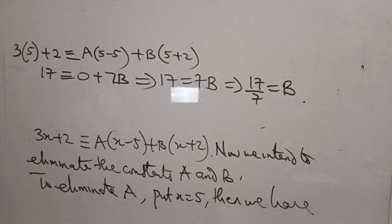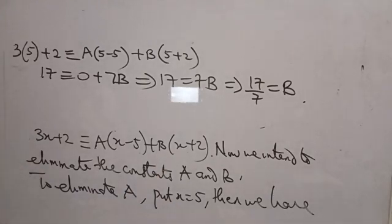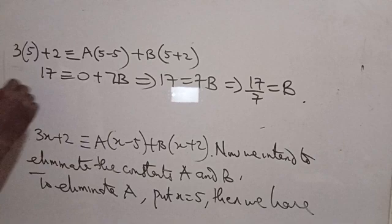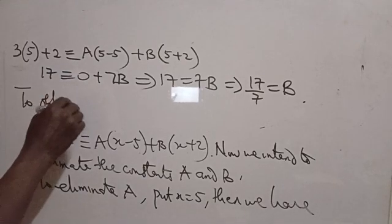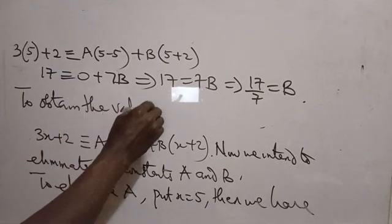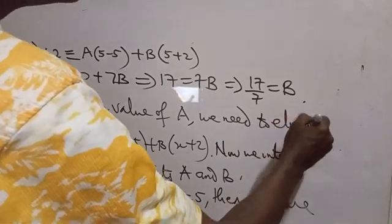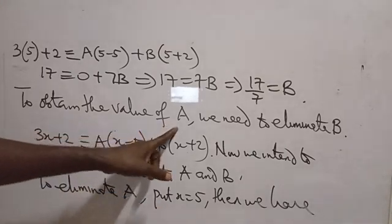So when you eliminate A from this equation, you get B. Now for us to get A, because you have gotten B by eliminating A, conversely to get A we have to eliminate B as well. To obtain the value of A, we need to eliminate B.